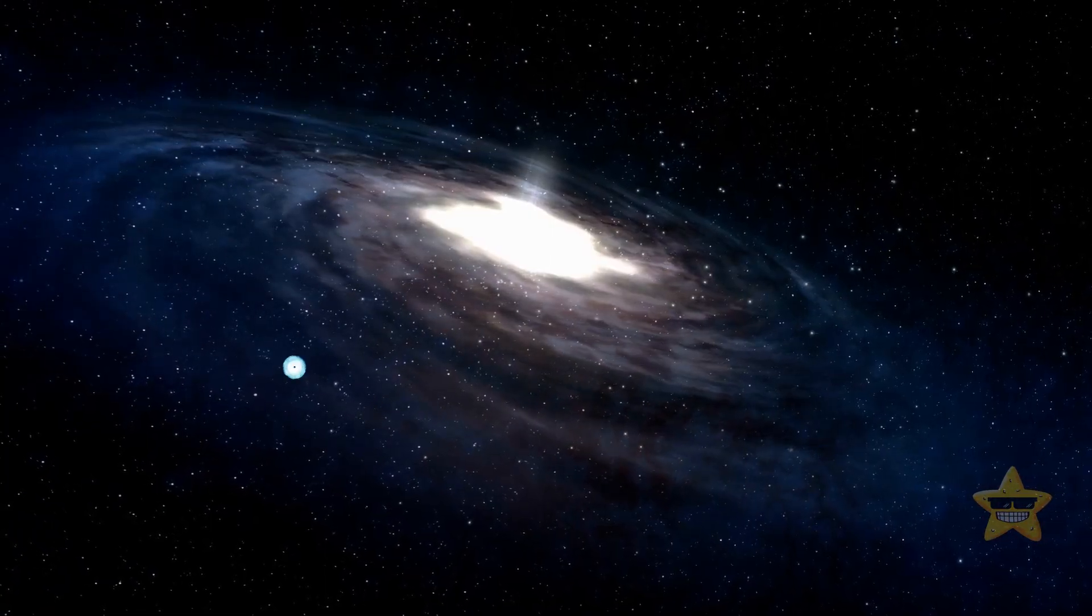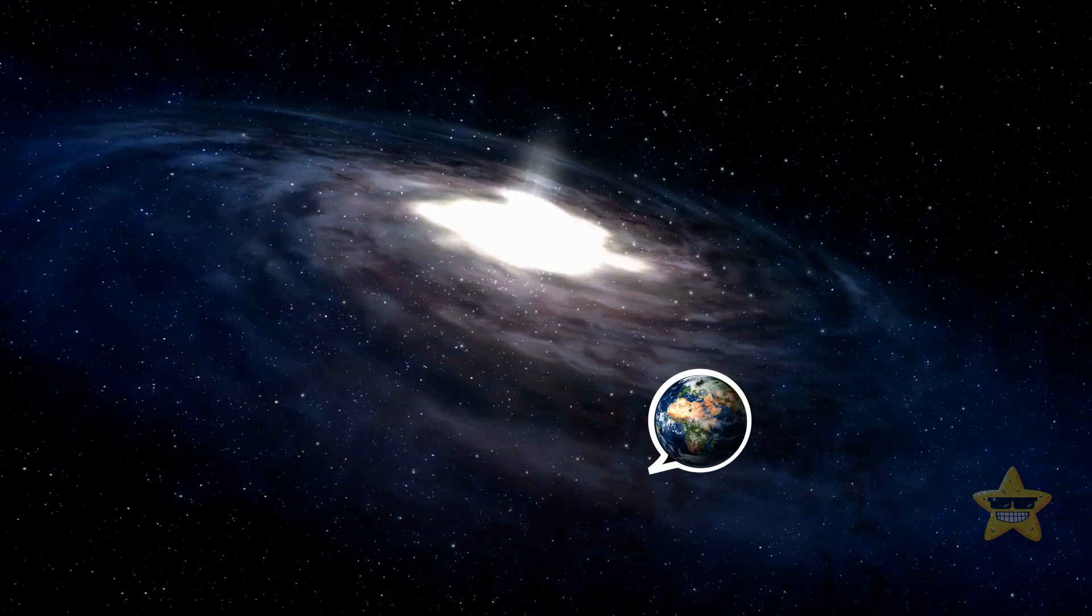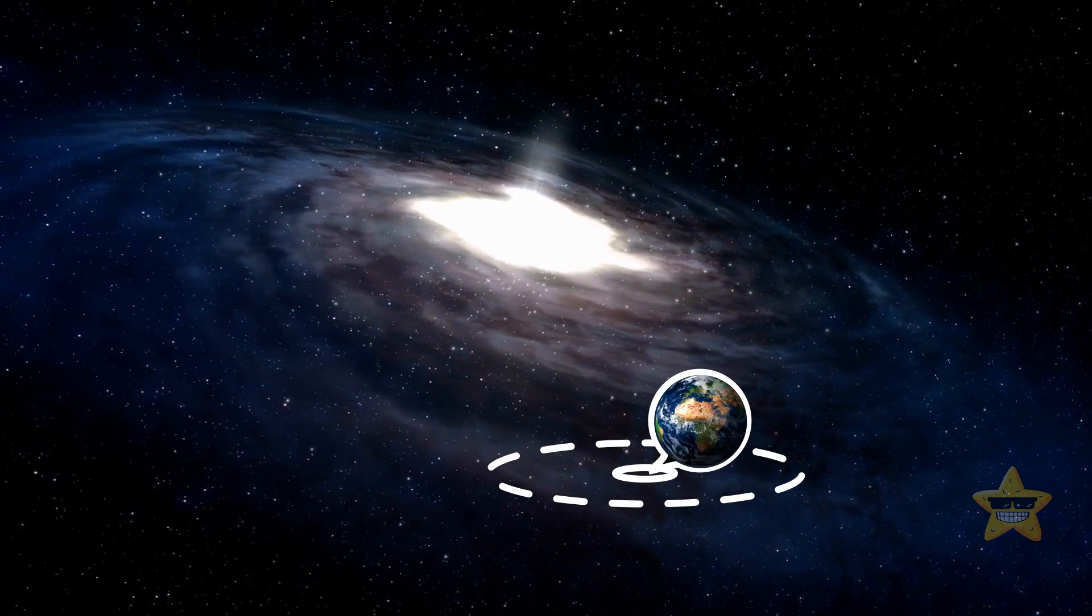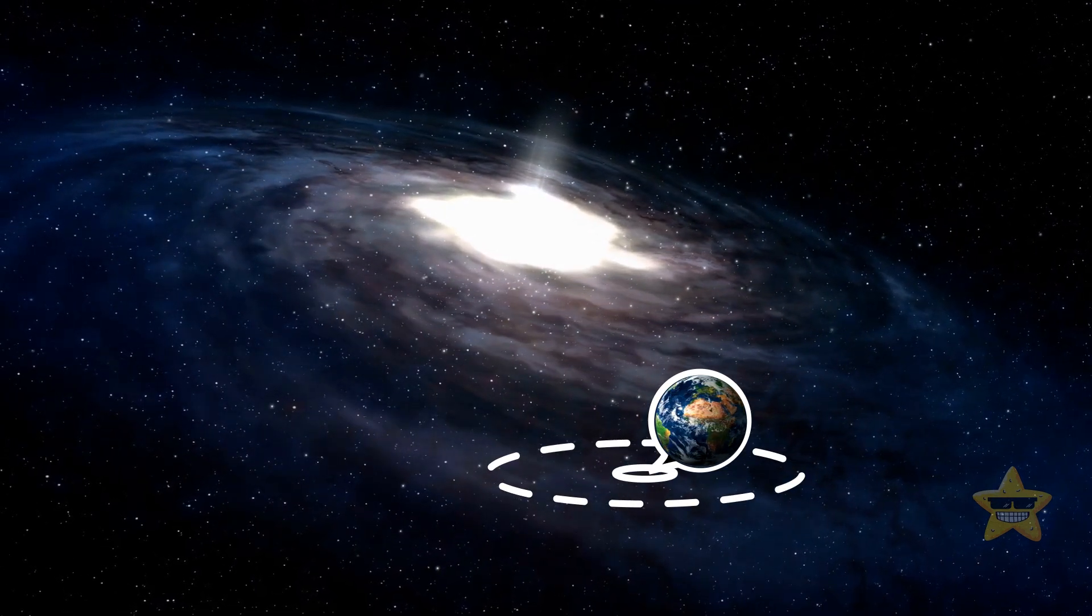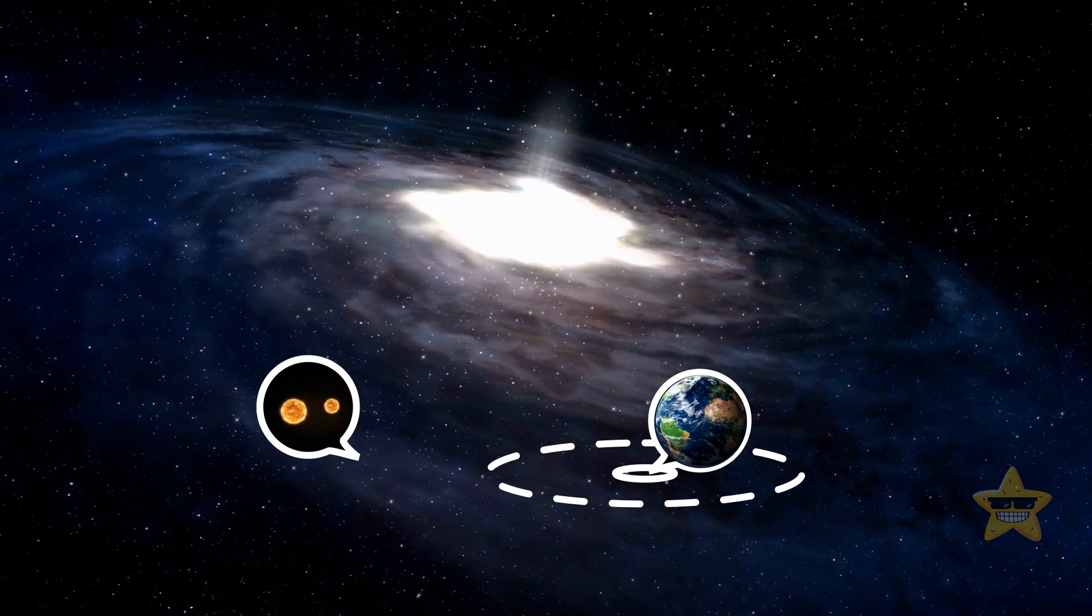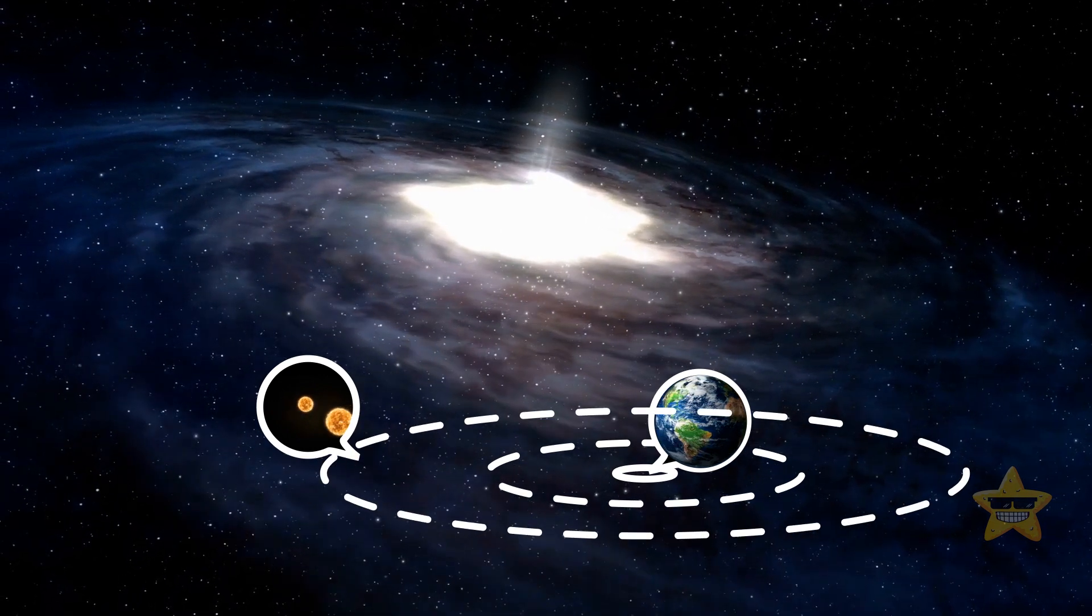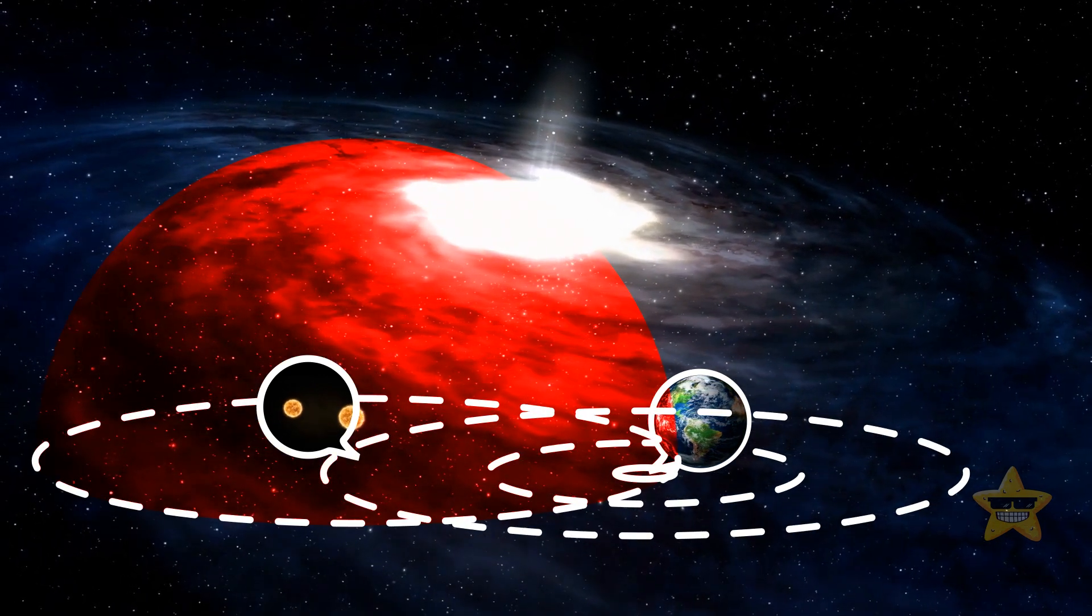On average, a supernova occurs in the Milky Way once every 50 years or so. Luckily, there are no stars massive enough to turn into a supernova within 50 light-years from Earth. Wait, is it too early to breathe a sigh of relief? A binary star system around 150 light-years away might potentially put us at risk.